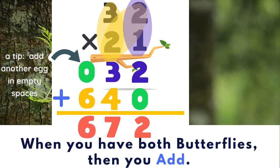Let's go ahead and add. Two plus zero is two. Three plus four equals seven. Zero plus six equals six. So the answer is 672.